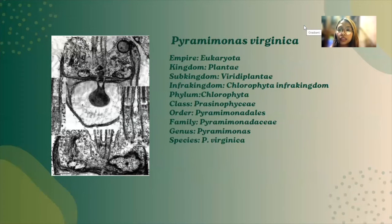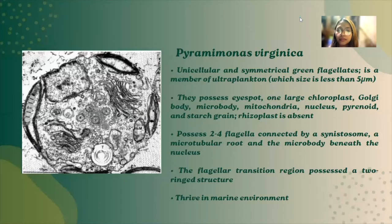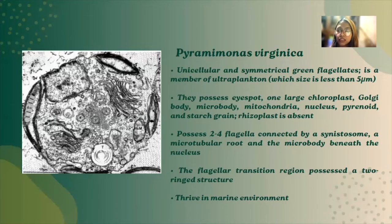Next is Pyramimonas virginica, Empire Eukaryota, Kingdom Plantae, Subkingdom Viridiplantae, Phylum Chlorophyta, Class Prasinophyceae, Order Pyramimonadales, Family Pyramimonadaceae, Genus Pyramimonas, and Species virginica. These organisms are unicellular and symmetrical green flagellates and members of the ultraplankton, with a size less than 5 micrometers. They possess an eyespot, one large chloroplast, Golgi body, microbody, mitochondria, nucleus, pyrenoid, and starch grain. However, the rhizoplast is absent. They possess 2 to 4 flagella connected by a syndesmosome, a microtubular root, and a microbody beneath the nucleus. The flagellar transition region possesses a 2-ring structure, and these organisms thrive in the marine environment.